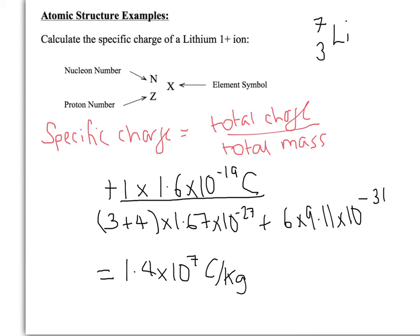Now, in these questions, be very careful whether it tells you it's an ion, whether it tells you it's an atom, or if it tells you that it's a nucleus, because obviously if it's a nucleus, you're going to have a much bigger charge on the top line, and obviously you won't include the electrons on the bottom. If it's an atom, it's always going to be zero, because atoms have zero charge. Obviously, if it's an ion, it's going to look very similar to this calculation we've done here. Okay.